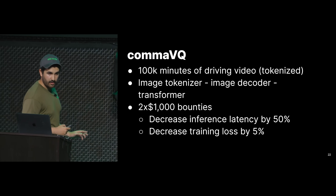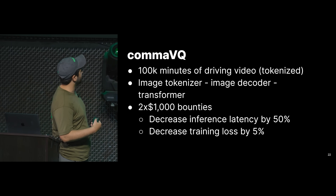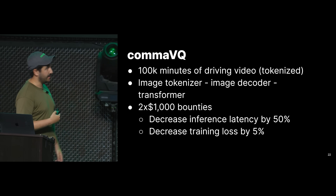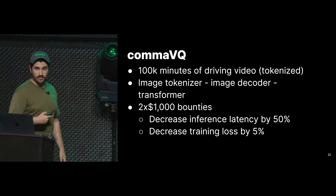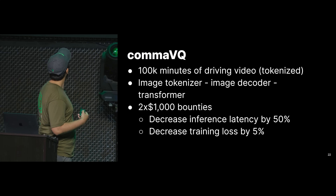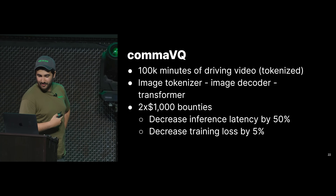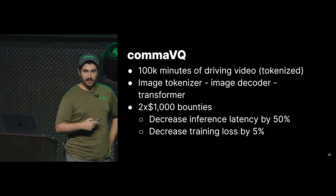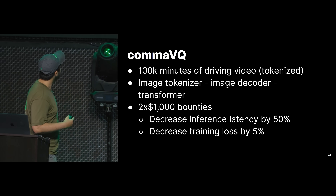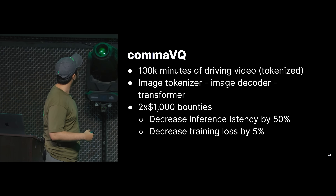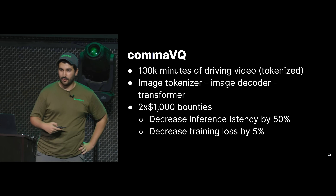We open sourced all of this: a dataset of 100,000 minutes of driving, tokenized with the tokenizer I showed. We open sourced the image tokenizer and the image decoder. We also open sourced a transformer very similar to the one I'm showing today that can generate rollouts like the ones shown. We also have two $1,000 bounties. Today the models run at 2 FPS and we want them to run really fast — if you improve inference latency by 50%, you get $1,000, and if you decrease training loss by 5%, you also get $1,000.